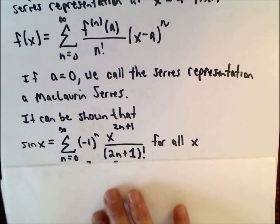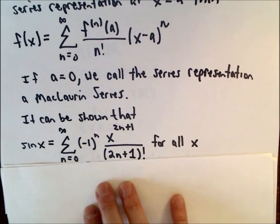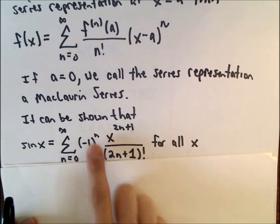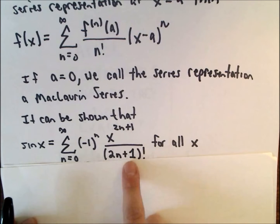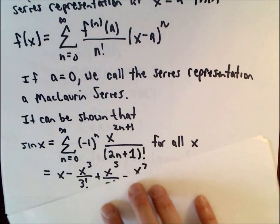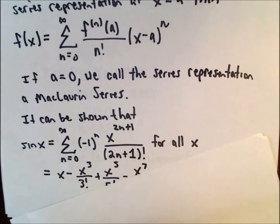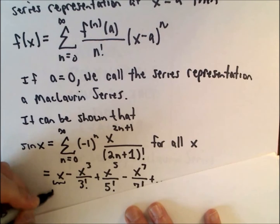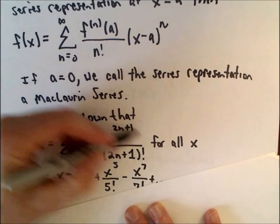Okay, so if you expand out this formula, it goes from n equals zero to infinity. Notice if you plug in n equals zero, we would have negative one to the zero, we would get x to the first power over one factorial. This would just simply reduce to x.